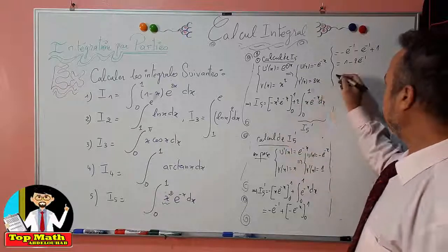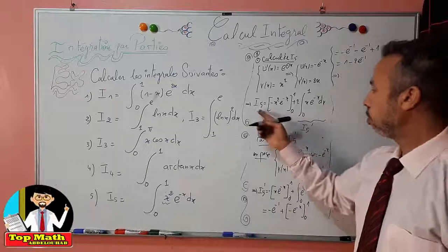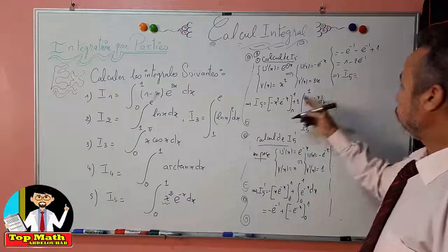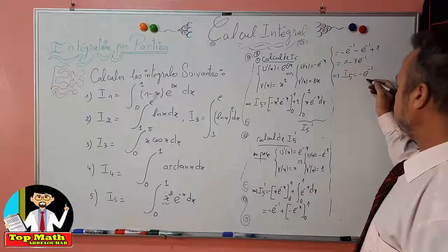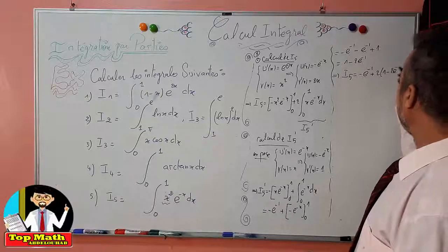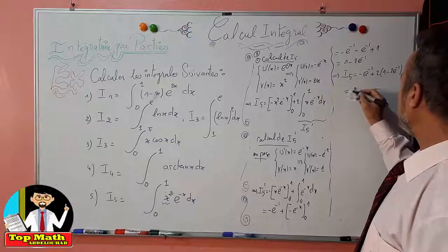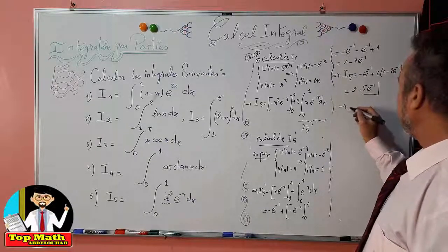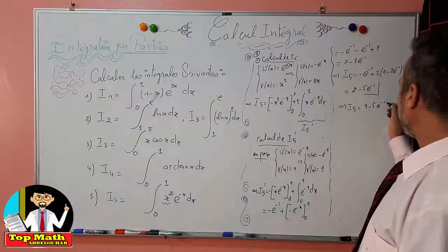Finally, we substitute I5' by its value into the expression for I5. So I5 = [−e^(−1)] + 2 × (1 − 2e^(−1)), which gives minus e^(−1) plus 2 minus 4e^(−1). Therefore I5 = 2 − 5e^(−1). The final value of I5 equals 2 − 5e^(−1).